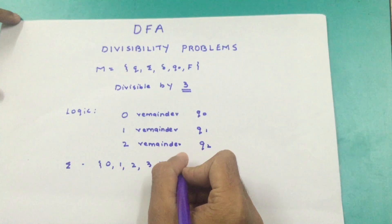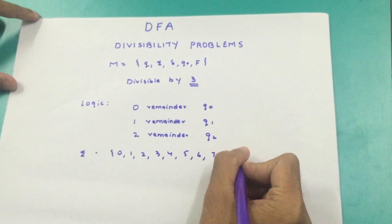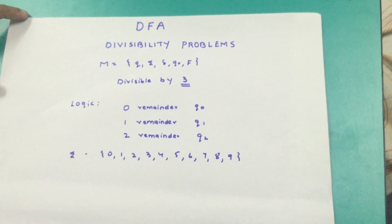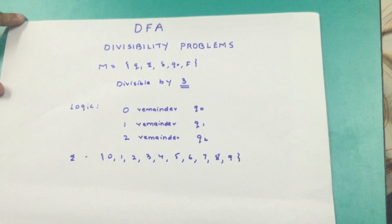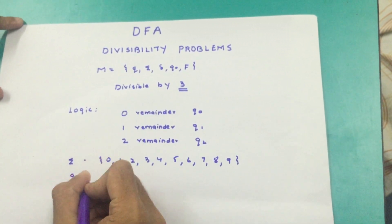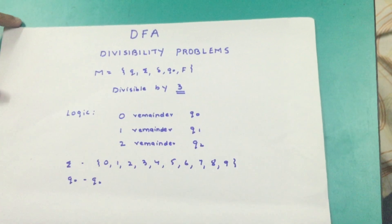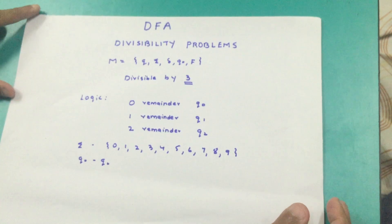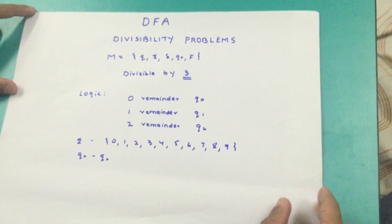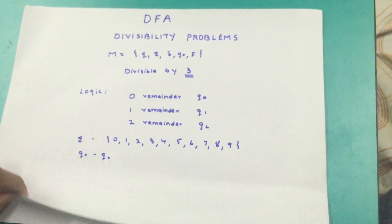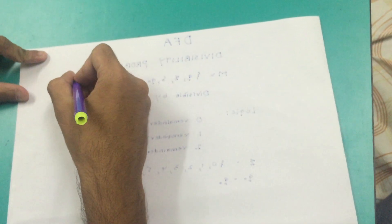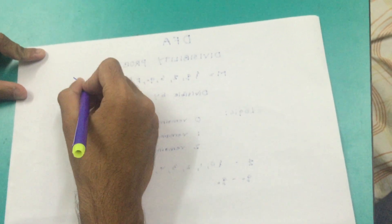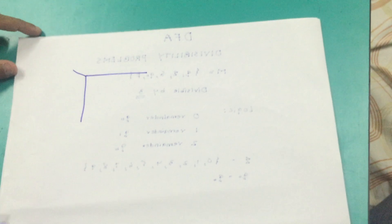Sigma will consist of 0, 1, 2, 3, 4, 5, 6, 7, 8, and 9 — that is, 0 to 9. Delta we will calculate a little later. My q0 is going to remain q0, and there is not going to be any final state in this because all we need to do is calculate the remainder. These kinds of questions don't have any final states. Now I'm going to carry on with my normal method — if you haven't seen my previous videos, check those out as they'll help with understanding this.